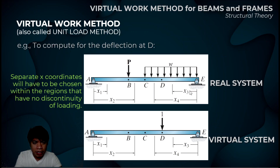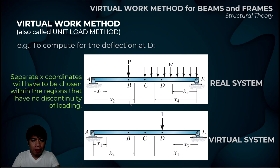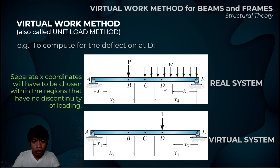So we will write two sets of moment equations: one set for the real system and one set for the virtual system. The number of moment equations depends on how many segments the system has. For example, if there are four segments, we write four moment equations for the real system and four for the virtual system — eight equations in total. Don't worry, it's easy once you get the hang of it.